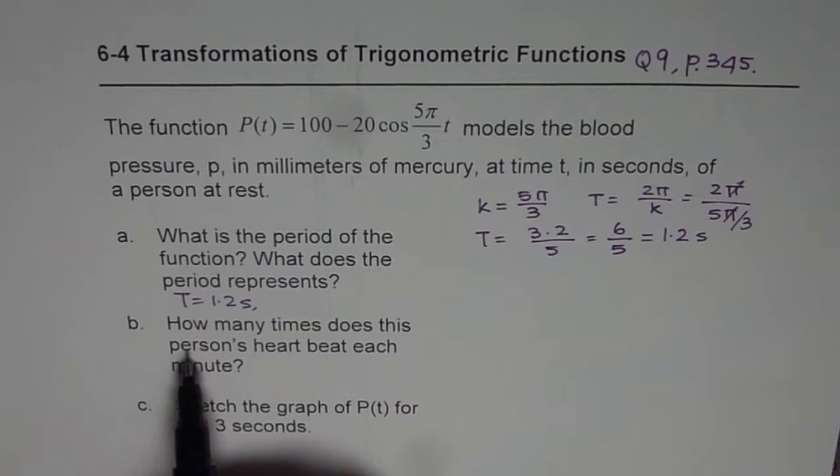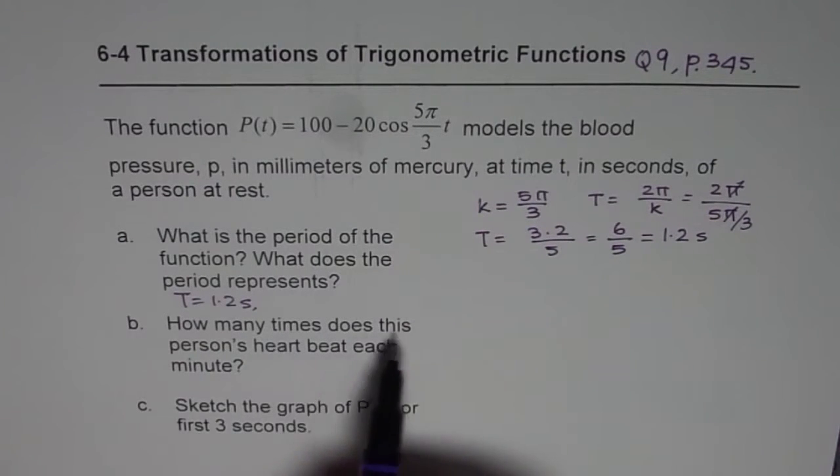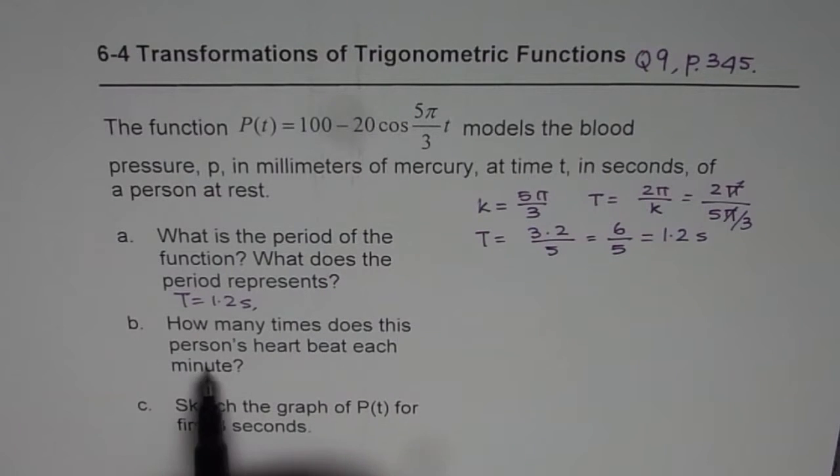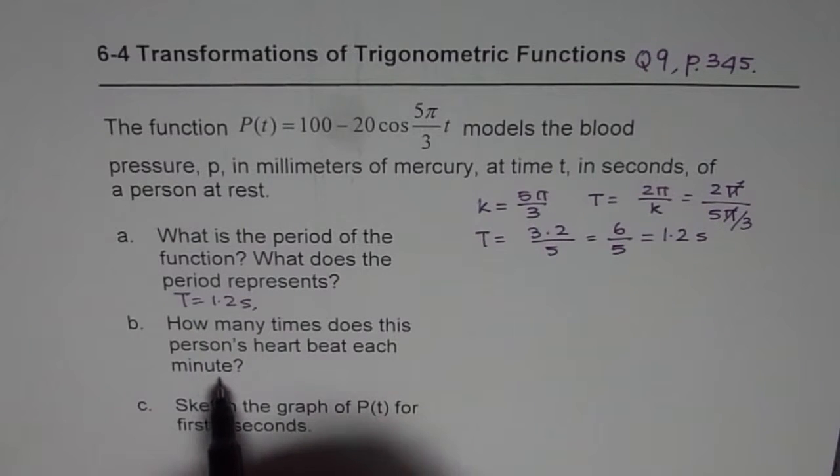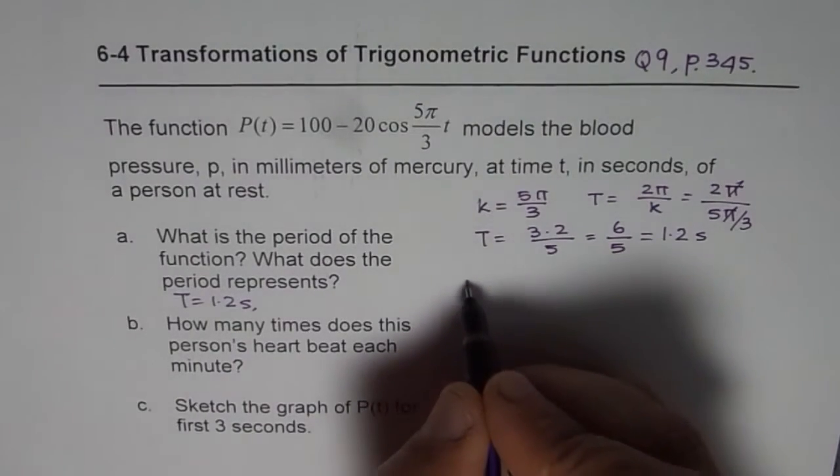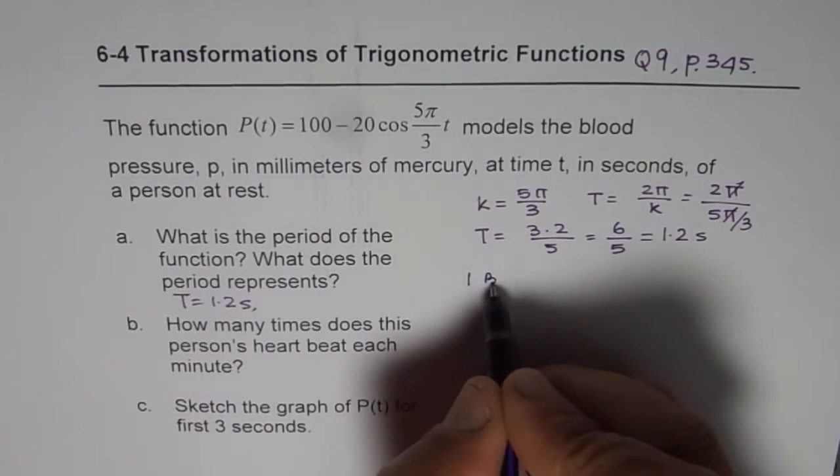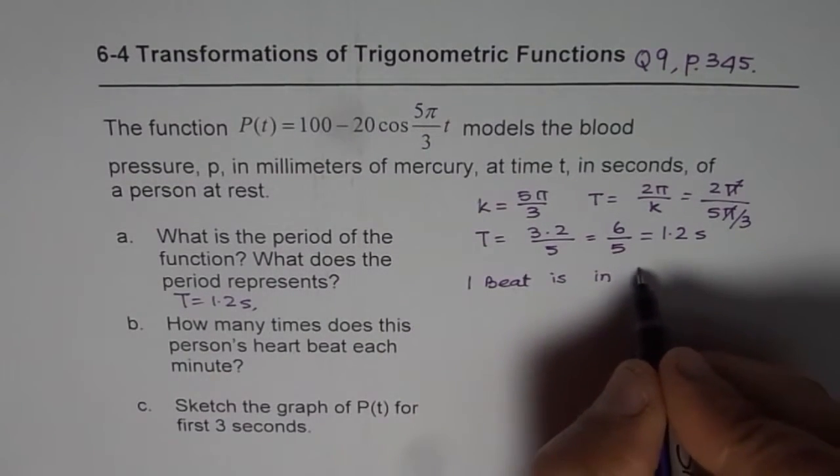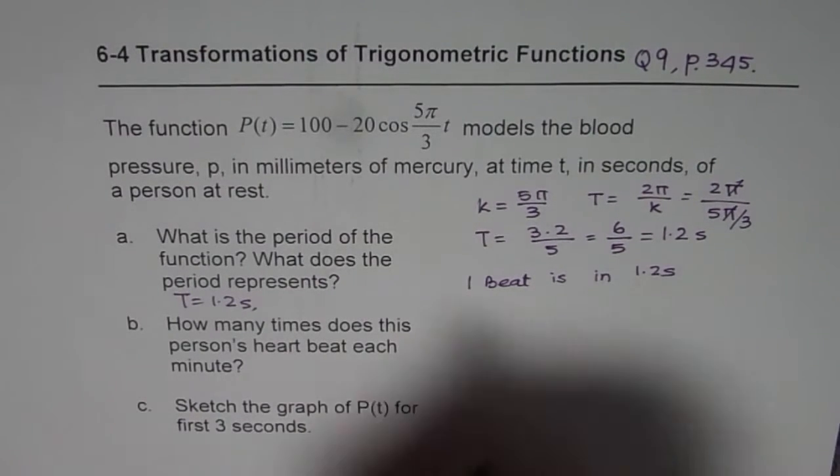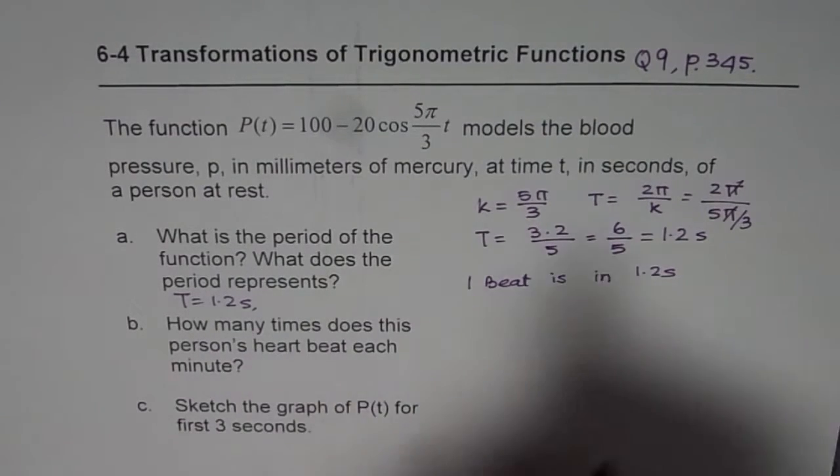Now it's related with part b. It says, how many times does this person's heart beat each minute? So it takes 1.2 seconds to beat the heart once. In one minute, there are 60 seconds. So we can say that one beat is in 1.2 seconds. That is what it means when we say period of the function.